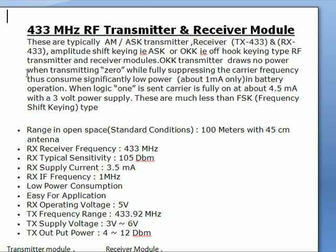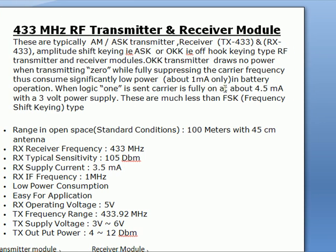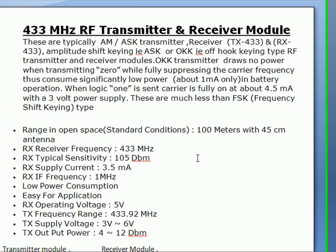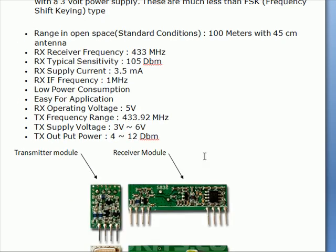OOK transmitters draw no power when transmitting a zero, while fully suppressing the carrier frequency, thus consuming significantly low power — about 1 milliwatt — in battery operation. When logic 1 is sent, the carrier is fully on at about 4.5 milliwatts with a 3 volt power supply. These consume much less than FSK (Frequency Shift Keying) type modules.